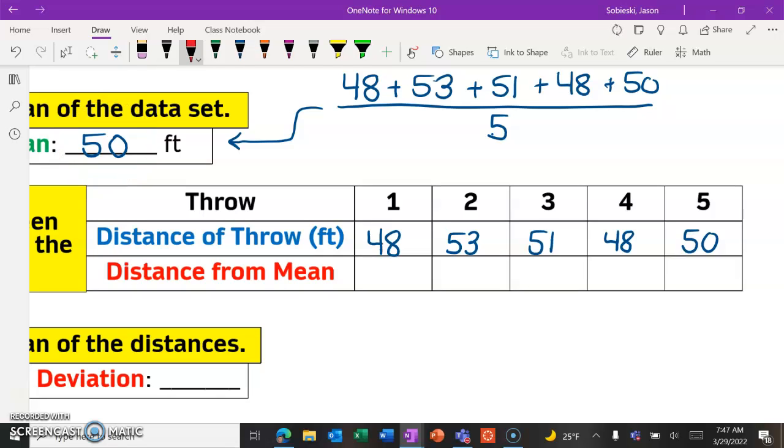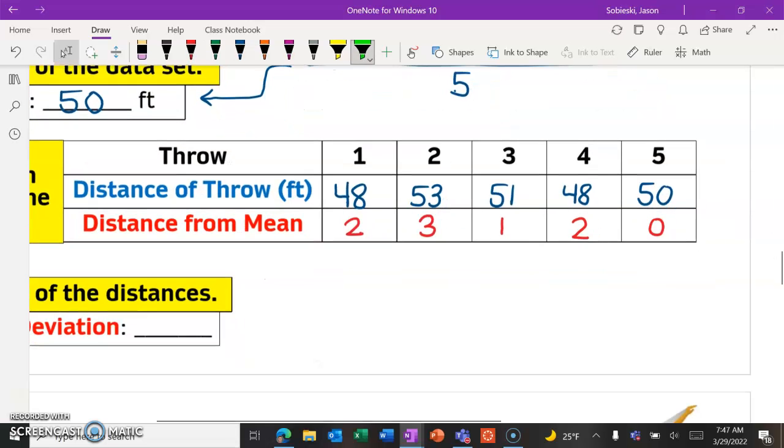Okay, so 48 is two away from 50, 53 is three away from 50, 51 is one away, 48 is two away, and 50 is zero away. And again, we have our distances.